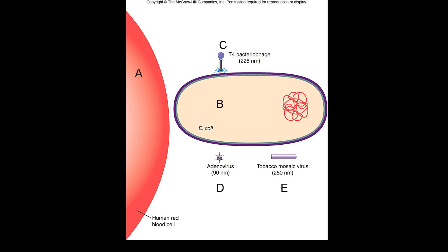An isometric virus is one that's the same shape all the way around — symmetrical. The adenovirus is an isometric virus. A prokaryotic cell in the diagram is E. coli. The human red blood cell is eukaryotic — even though it doesn't have a nucleus, it's still bigger than a prokaryotic cell. This slide also shows several different shapes that viruses can take.